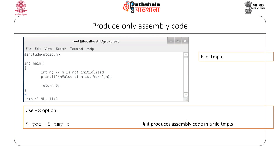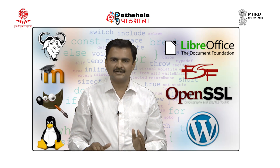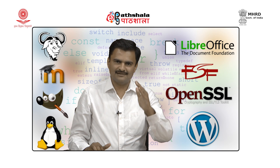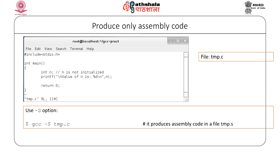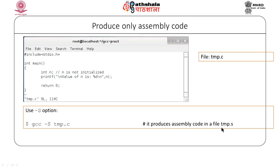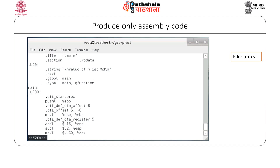During compilation, before linking happens, assembly code is generated. If the programmer wants to see the assembly code, use the minus capital S option: gcc -S tmp.c. This produces assembly code in a file called tmp.s. It is not required to provide the minus o option here — by default the compiler creates a file named with the source file's base name and a .s extension. The generated assembly code can then be viewed in tmp.s.